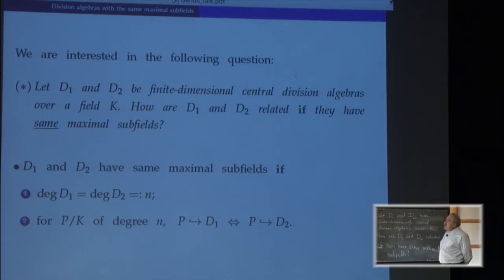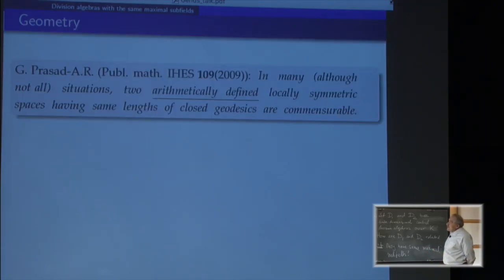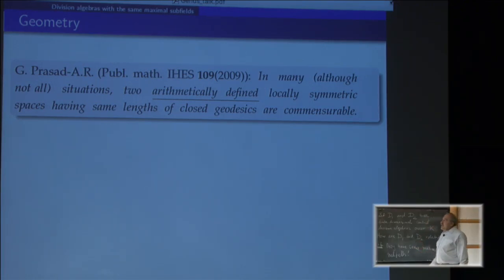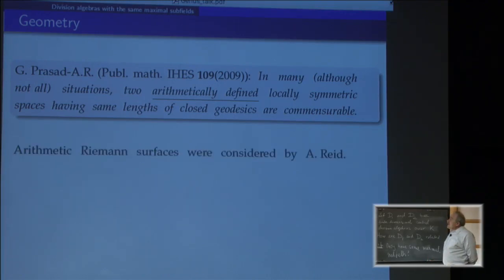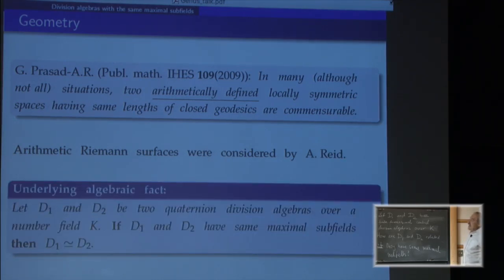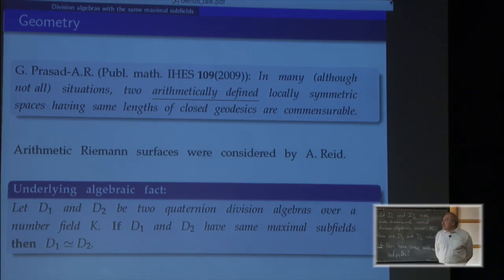We first came across this question in joint work with Gopal Prasad thinking about locally symmetric spaces. Some years ago we proved that in many, although not all situations, two arithmetically defined locally symmetric spaces having the same lengths of closed geodesics are commensurable. For arithmetic Riemann surfaces, this result was obtained earlier by Alan Reid. The underlying algebraic fact is that if we have two quaternion division algebras over a number field, and they have the same maximal subfields, then they are necessarily isomorphic.